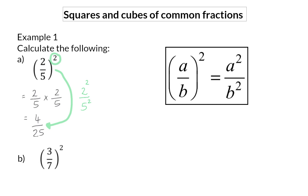Next, if we have a look at b, you can simply write the answer by squaring the numerator to get 9 and squaring the denominator to get 49.